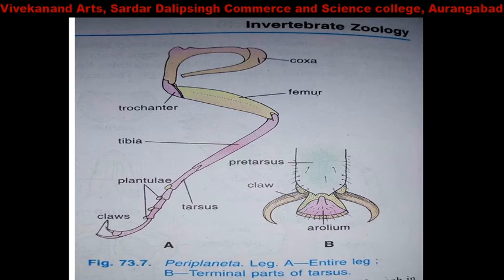Each leg consists of five segments. The large basal region is the coxa, which articulates with the thoracic segment between the pleuron and sternum. The coxa is followed by the trochanter region, which is freely movable on the coxa and fixed to the next segment, the femur.